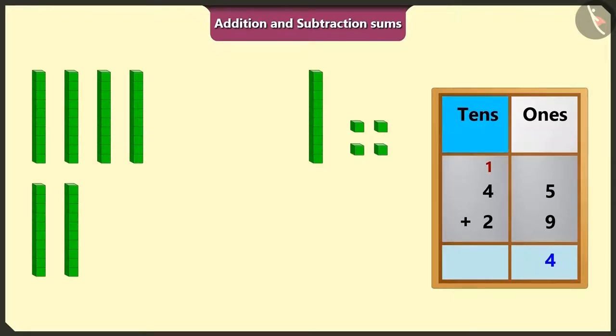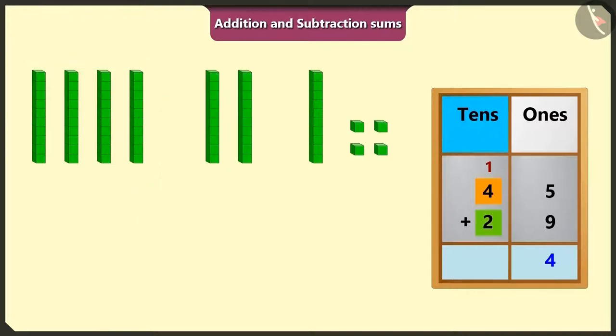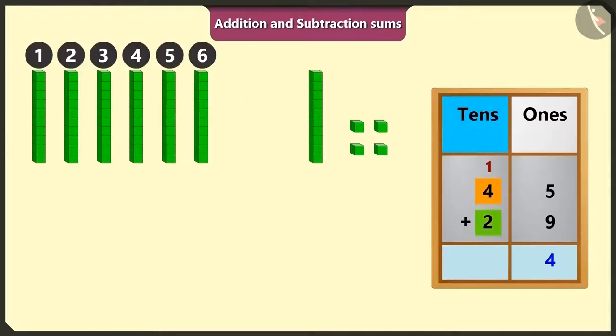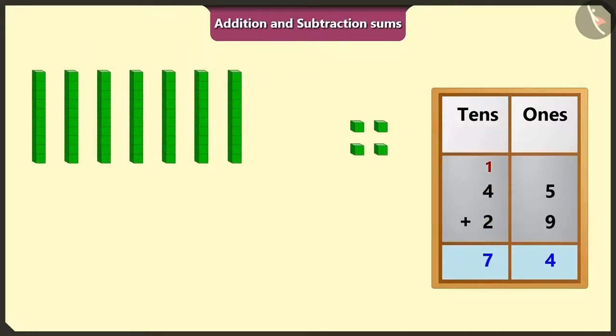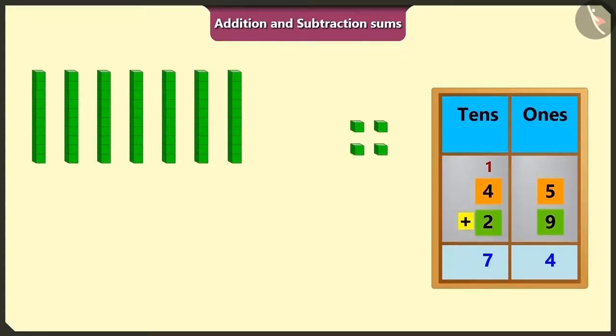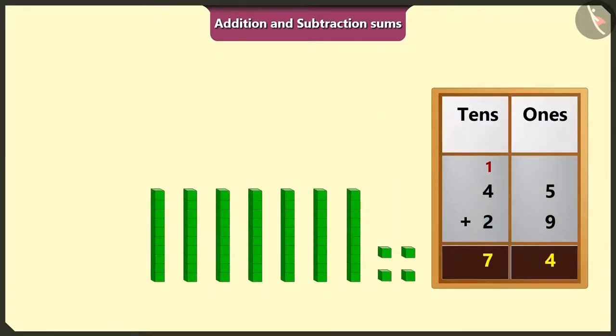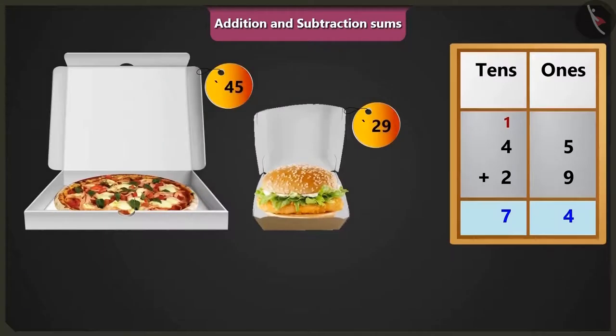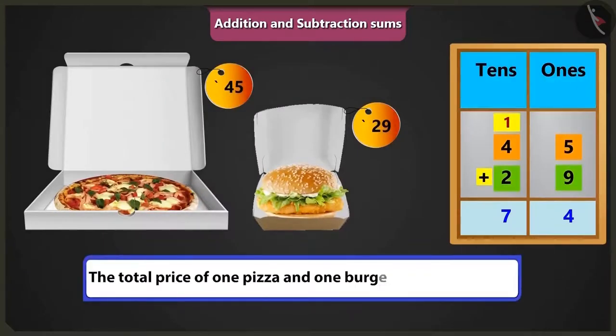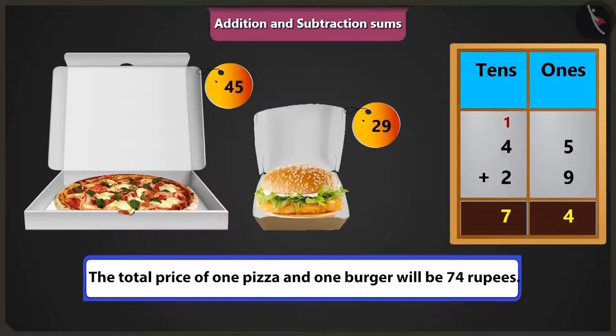Now, if we will add 2 tens in the bigger number, 4 tens in the box of tens, it will be 6 tens and if we will add 1 ten carry over in 6 tens, then it will be 7 tens. So, in this way, if we will add 29 rupees to 45 rupees, it will be 7 tens and 4 ones means 74 rupees. So, the total price of one pizza and one burger will be 74 rupees.